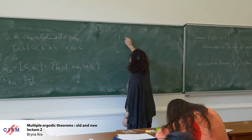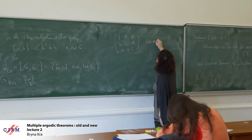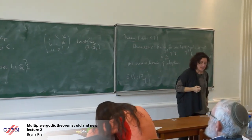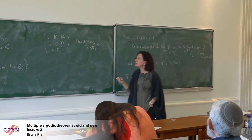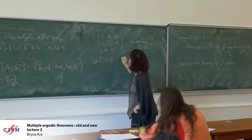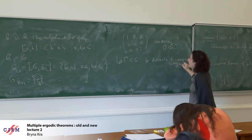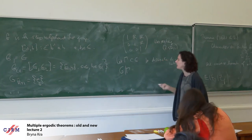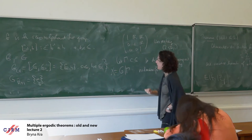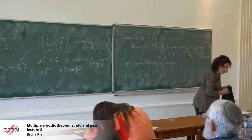The example to keep in mind for a two-step nilpotent group is the Heisenberg group: upper triangular matrices with ones on the diagonals and entries in R. Now I said these are nil systems, so I have to turn this into a system. The first thing is to turn it into a manifold. Gamma will be a discrete and co-compact subgroup, and when I quotient on the right, I get a compact space X — this is the definition of a nil manifold: a k-step nilpotent Lie group modded out by a discrete co-compact subgroup.